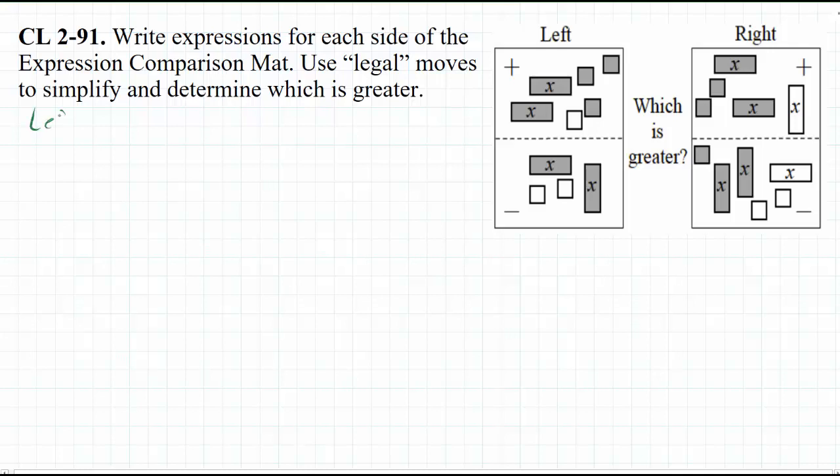So for the left side, I'm going to do in green. I'm going to write the original expression. So we have 2x plus 3 and then minus 1, and then we'll have minus all of this, the 2x minus 2.